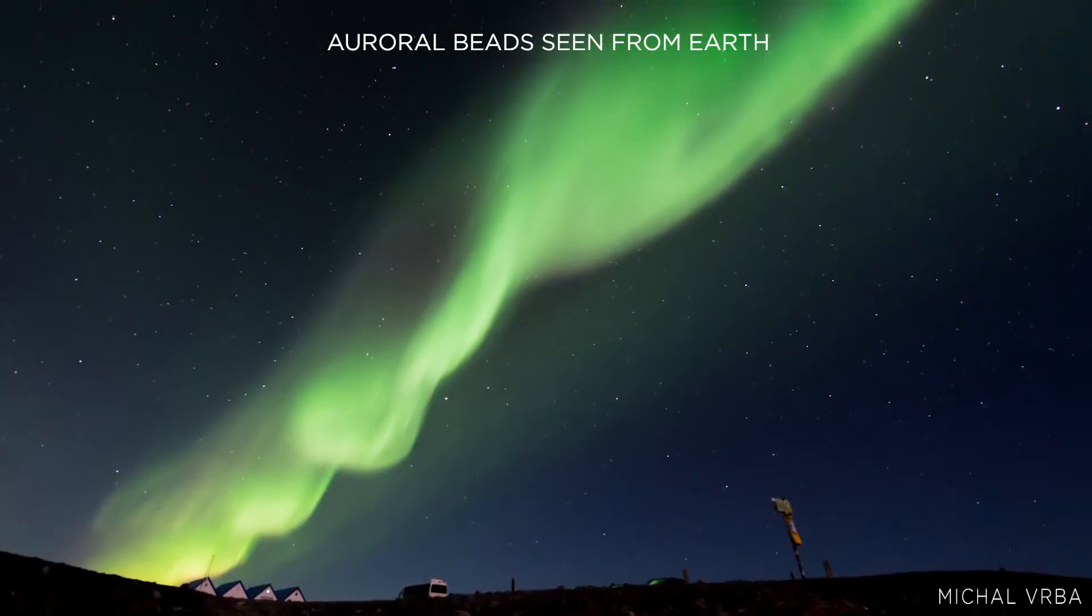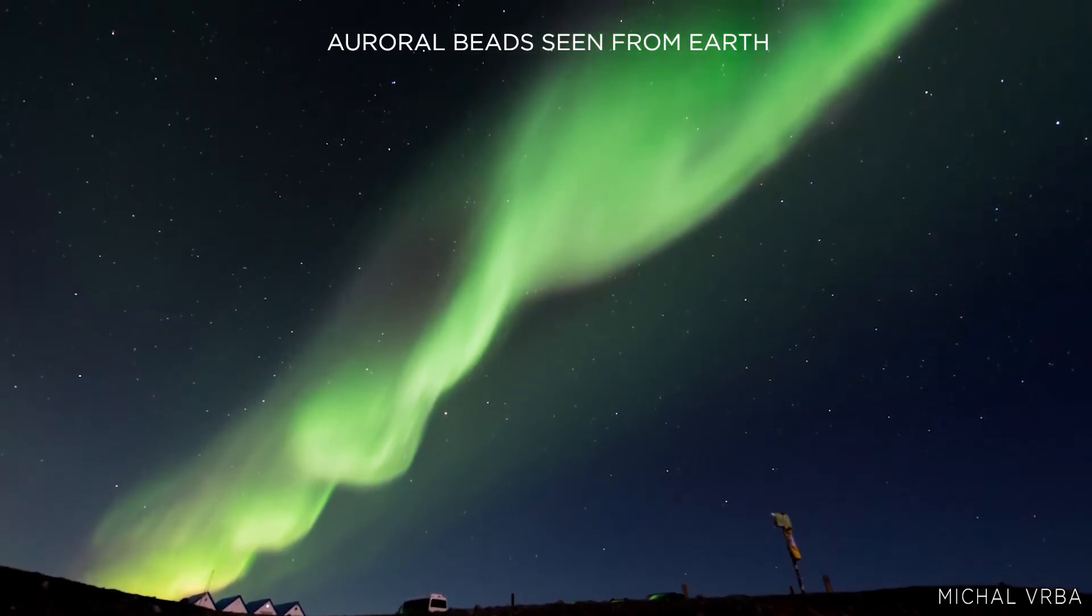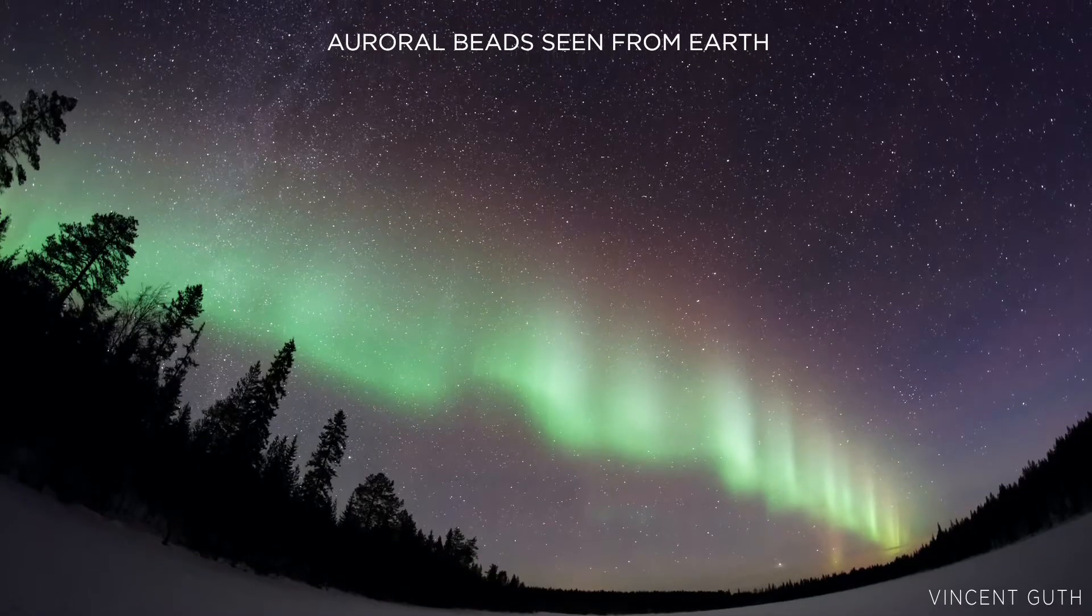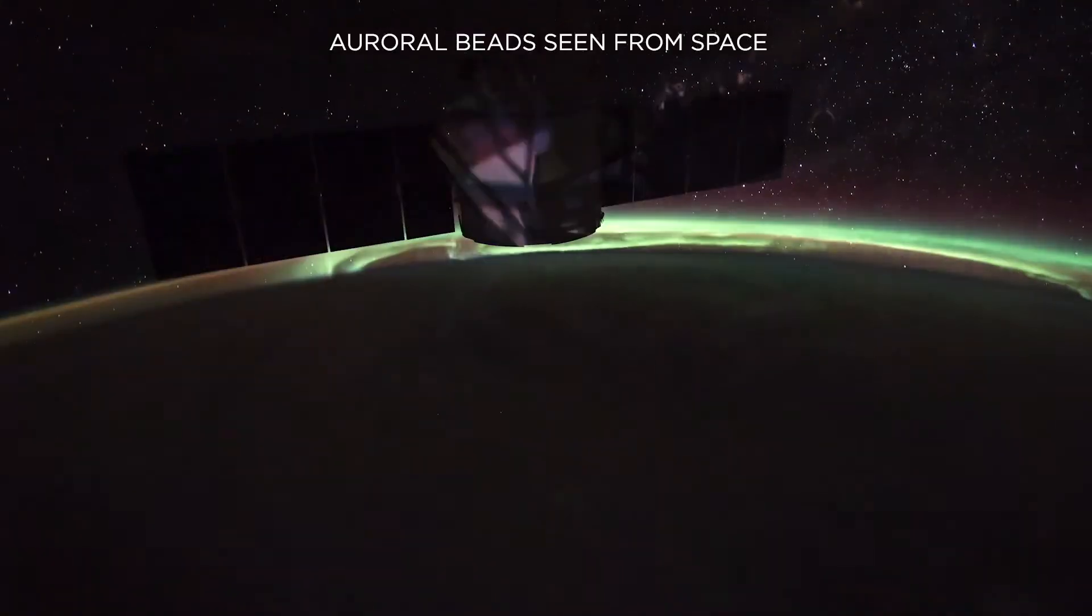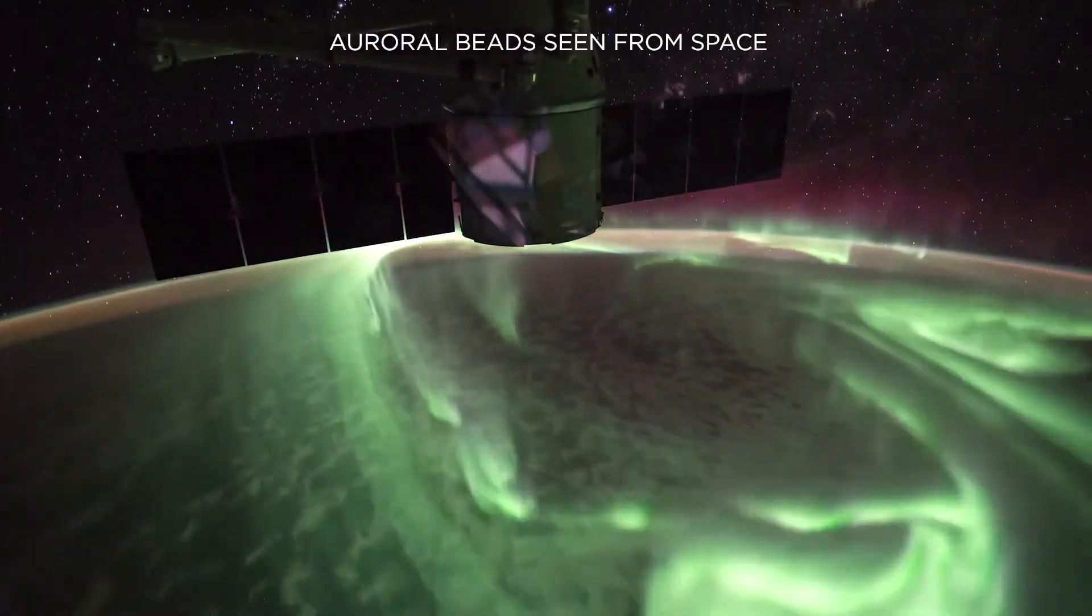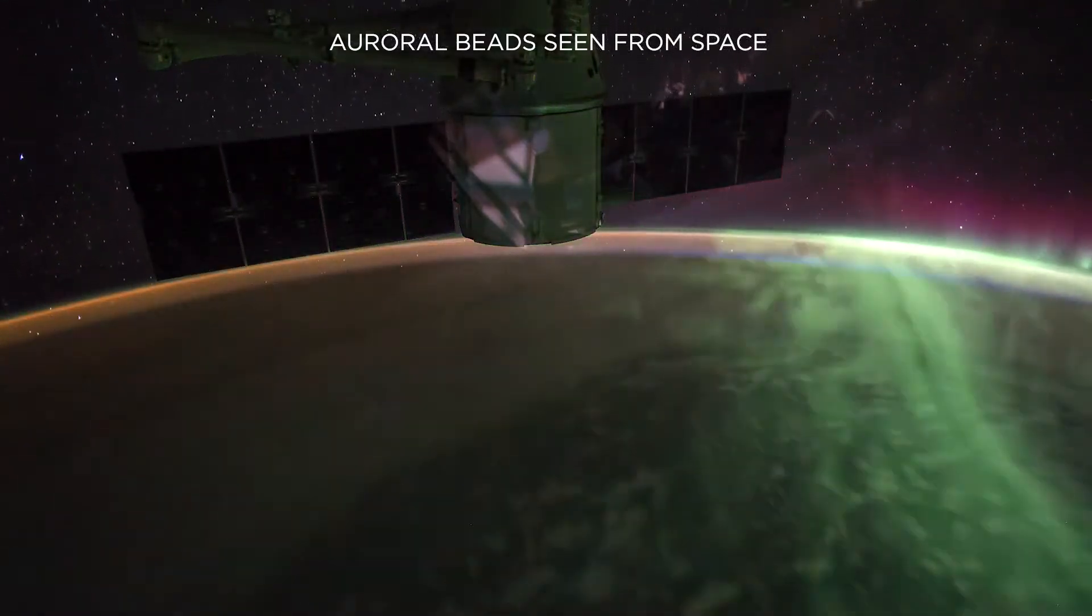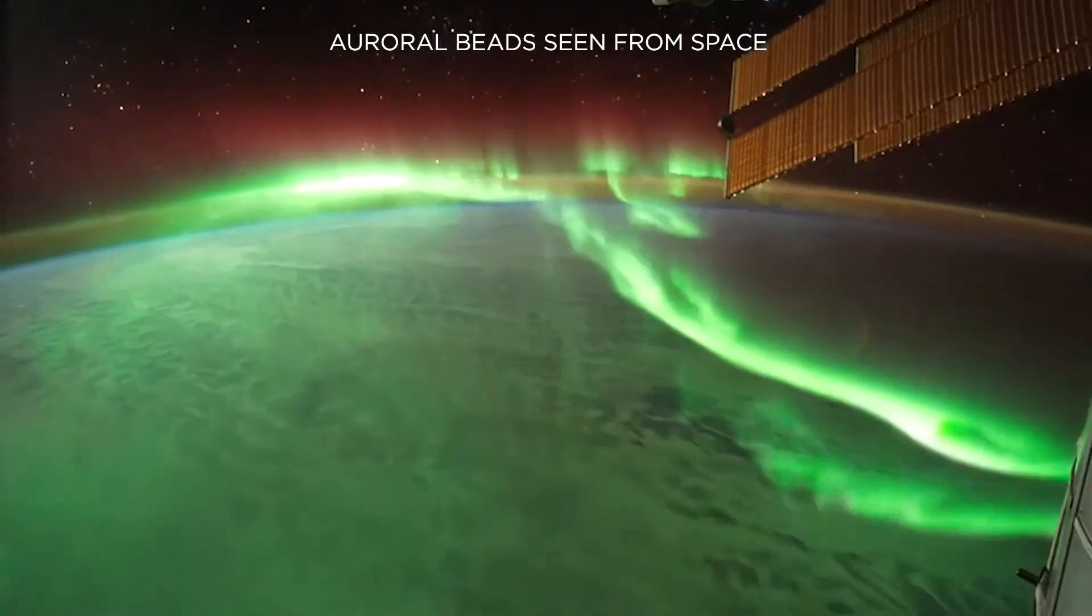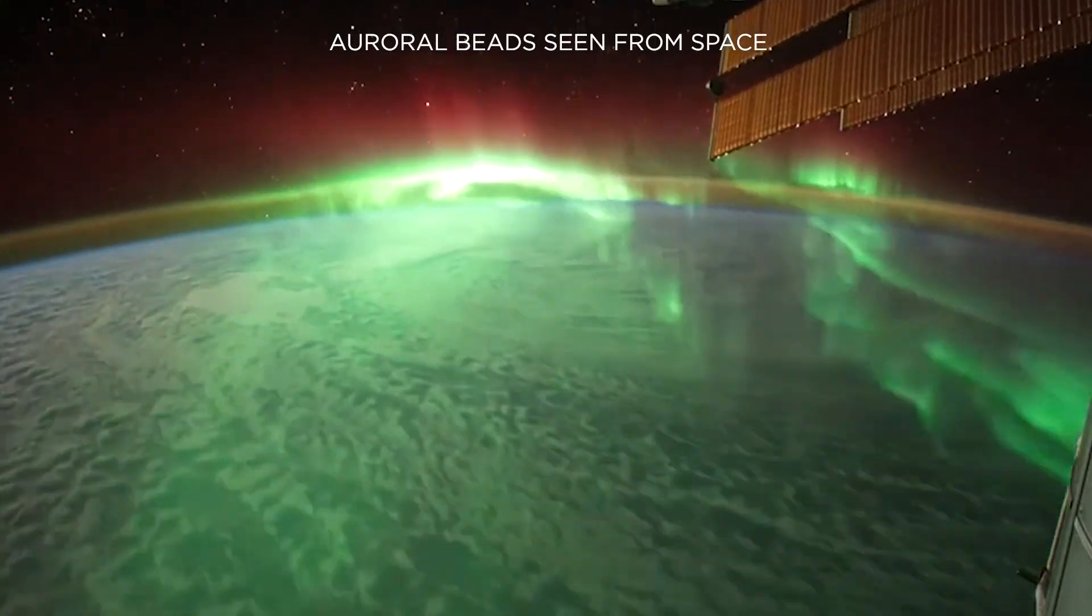Structures like these can reveal how Earth's magnetic field interacts with solar material gushing through space. Understanding these interactions better could help scientists protect low-Earth-orbiting satellites from extreme solar events. But until now, how the beads form has been a mystery.